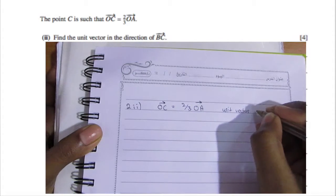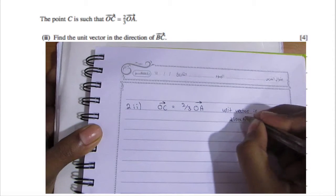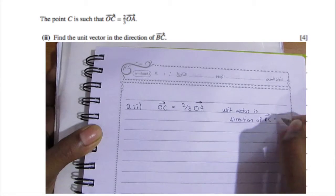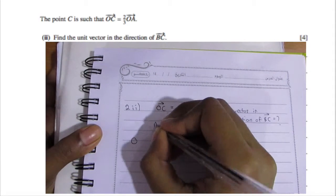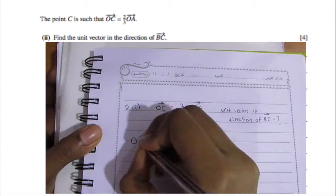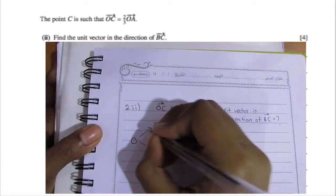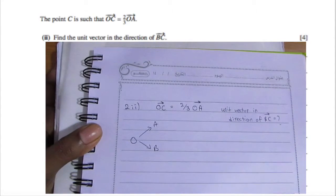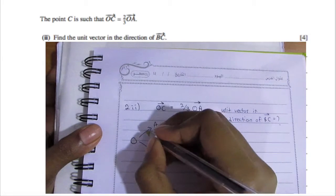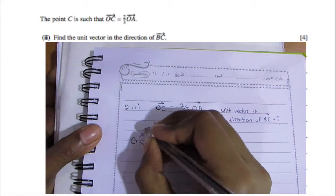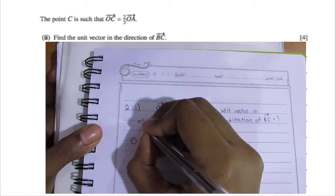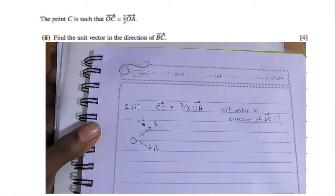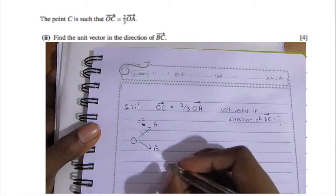You don't have to memorize the dot product formula since it's on the formula sheet, but it's good to know so you don't waste time searching. Part ii: point C is such that OC is two-thirds of OA. Find the unit vector in the direction of BC. It helps to draw a small diagram with O as the origin, and points A, B, and C.